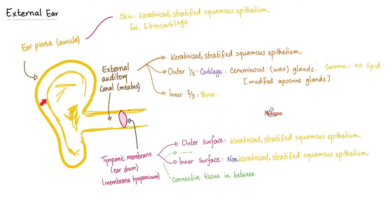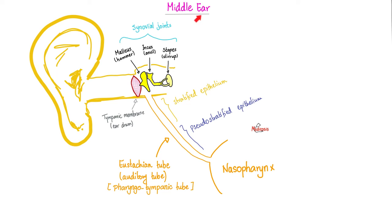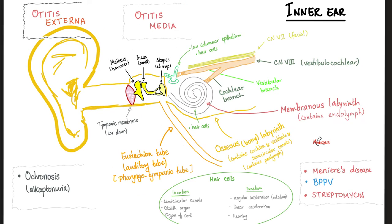The external ear is made of the ear pinna, the external auditory canal, and the eardrum, or the tympanic membrane, or the membrana tympanicum. After this, we have the middle ear — the famous three bony ossicles: malleus, incus, stapes, or hammer, anvil, stirrup. Don't forget that the middle ear connects to your nasopharynx via the Eustachian tube, or the auditory tube, or the pharyngotympanic tube, or the tympanopharyngeal tube. And that's why, if I have otitis media, it probably came from an upper respiratory tract infection that has spread upwards. As for the inner ear, it is for hearing and balance.